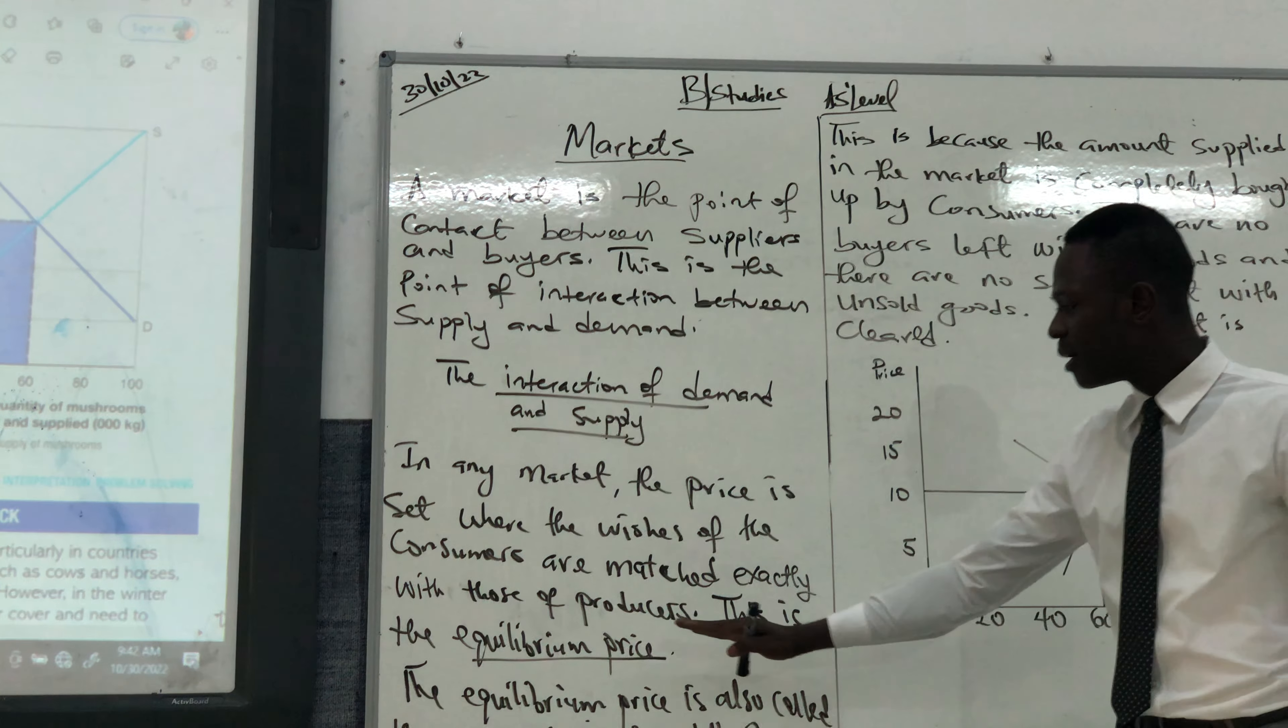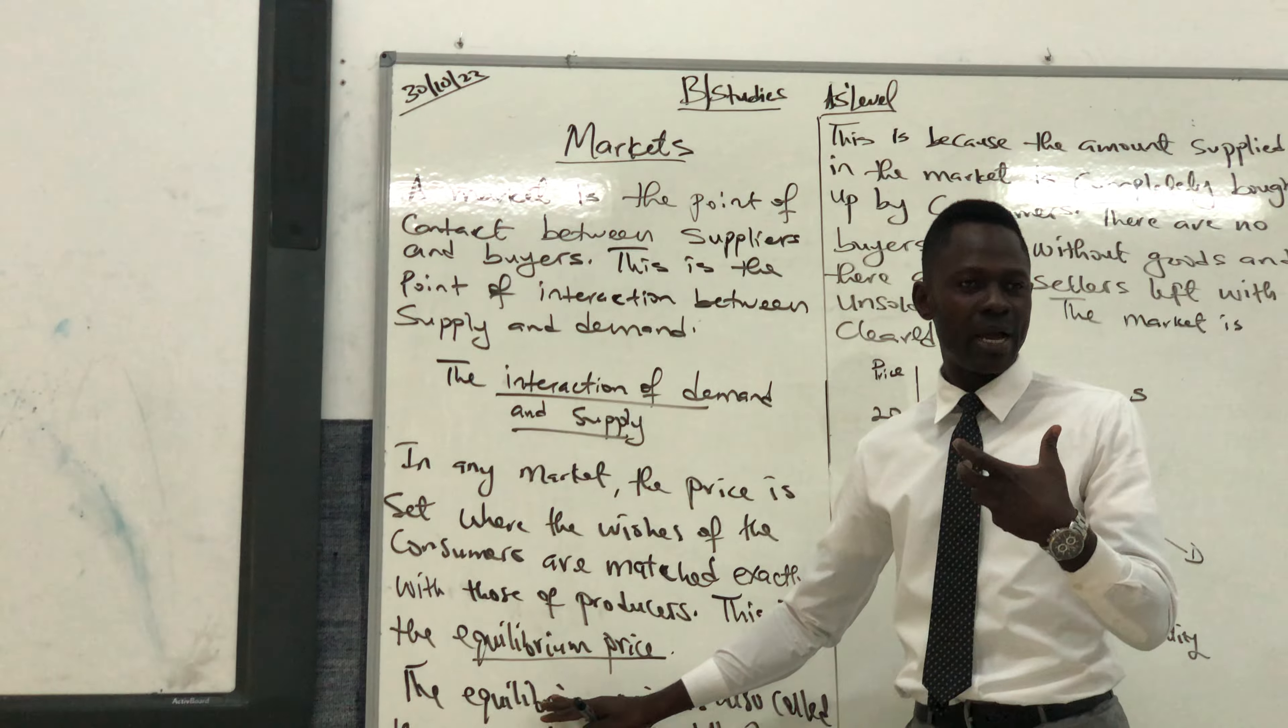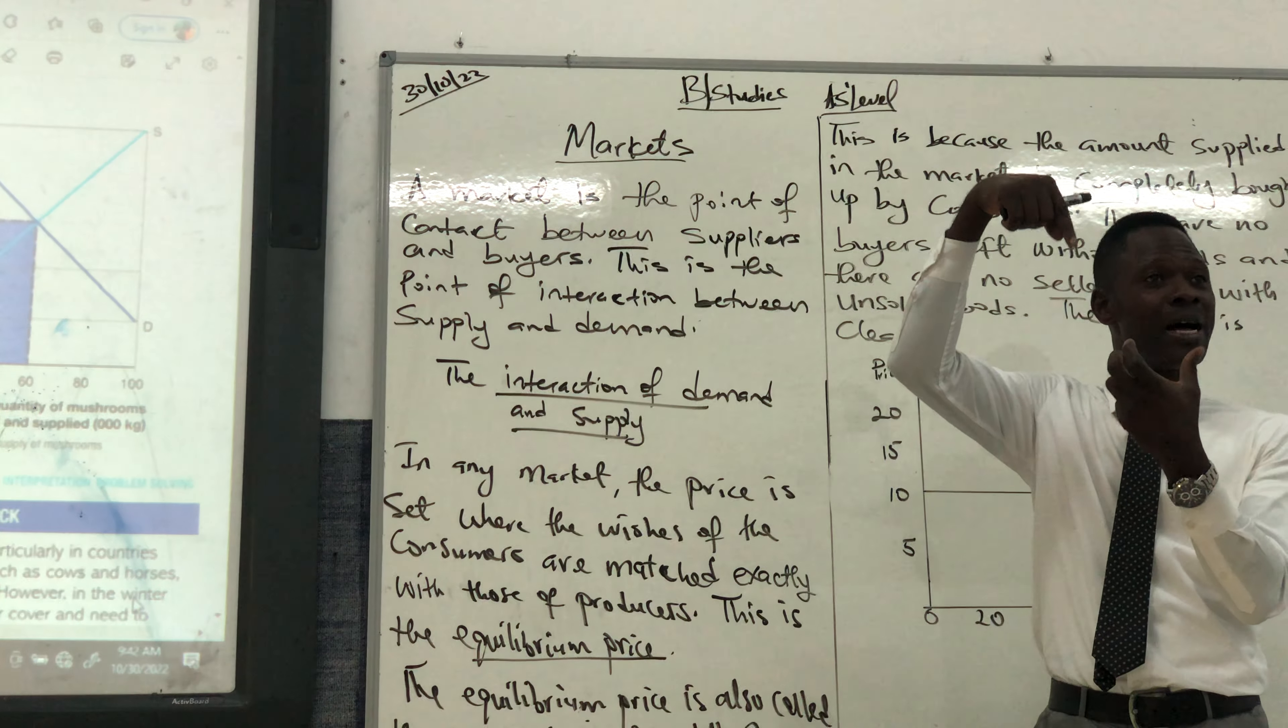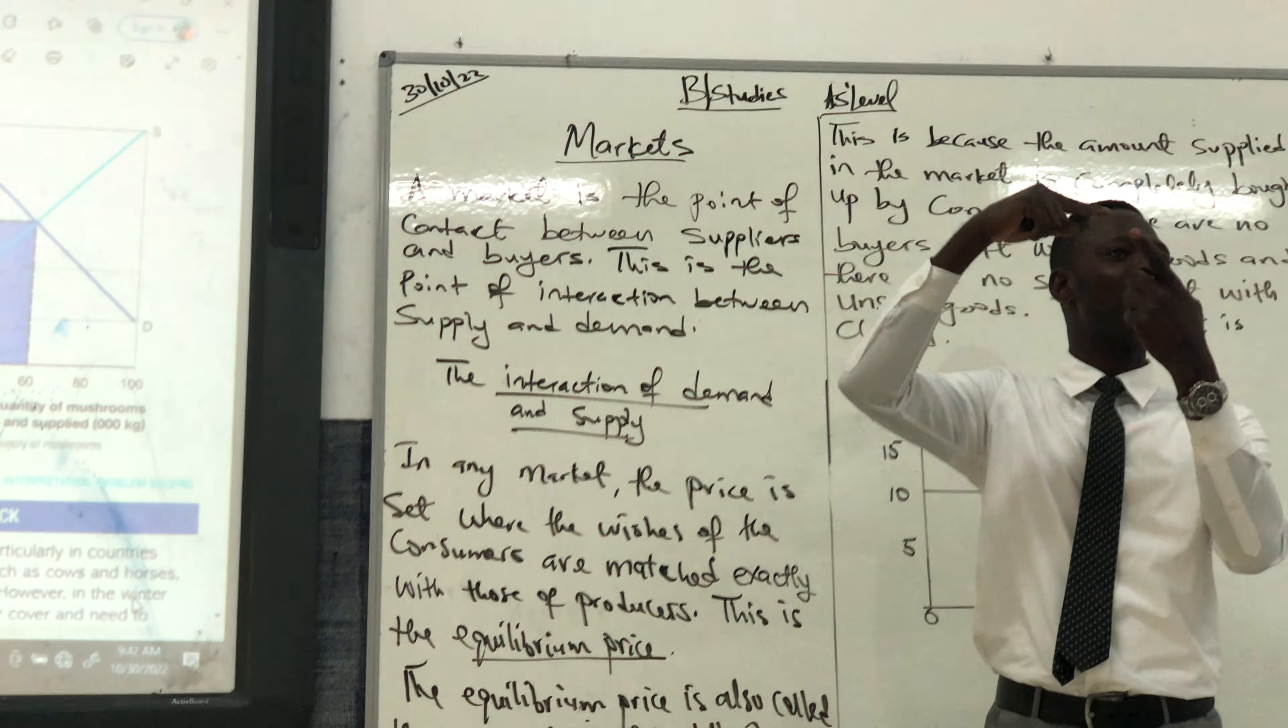We have equilibrium price. What does equilibrium price imply? It means that the quantity demanded for that product and the quantity supplied in that market has matched.